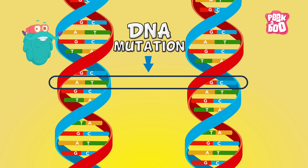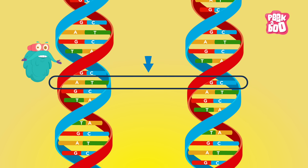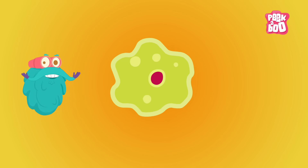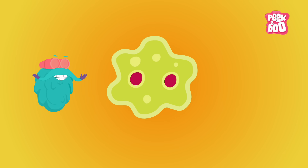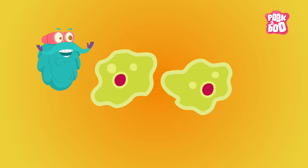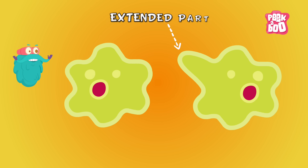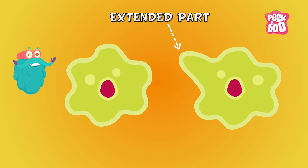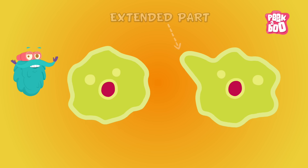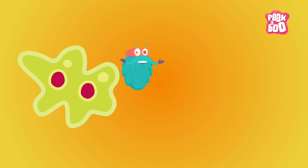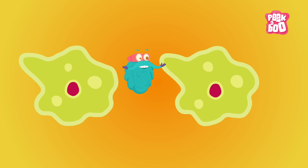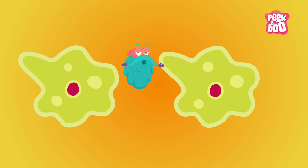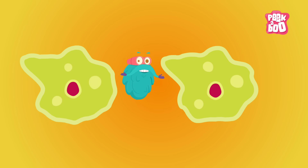These mutations, which can be random or accidental, cause variation in the body shape and characteristics of the creatures who inherit them. And if the new creature survives long enough to reproduce, these unique characteristics will be passed on to its new generation, resulting in the evolution of that species.